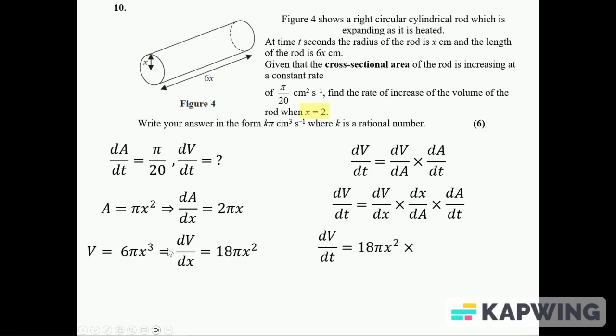So the dV over dt, well I know this - I've got that over here. This dx over dA, well it's just this flipped, so 1 over 2π x. And then multiplied by the dA over dt which tells us in the question. A bit of simplifying again, get rid of π's on the top and bottom and an x.